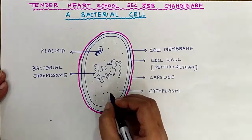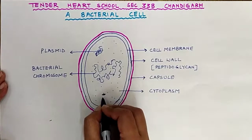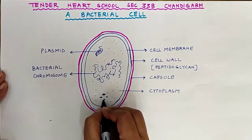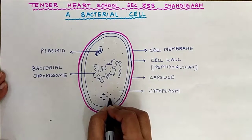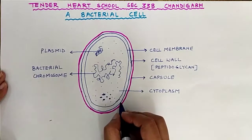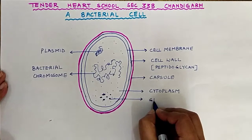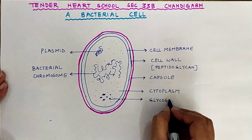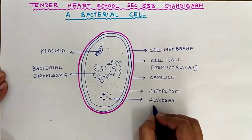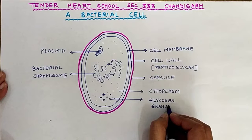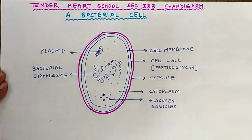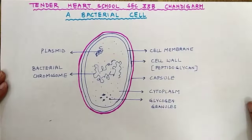Along with it, you can also show some glycogen granules here — some carbohydrate glycogen granules. So here you can write it as glycogen granules.